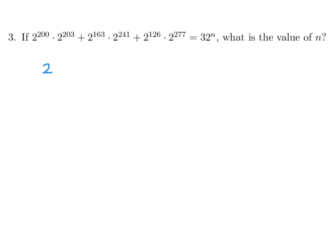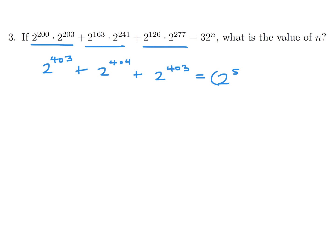Since bases are the same, we add exponents: 200 plus 203 is 403, 163 plus 241 is 404, and 126 plus 277 is 403. And 32 I'll change to a power of 2, which is 2 to the power of 5.